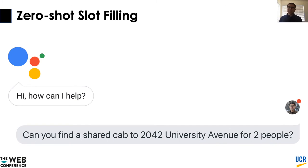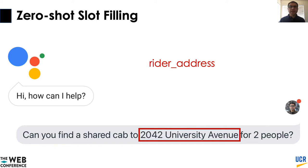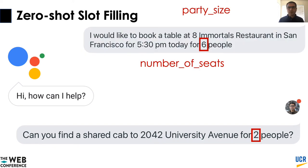Let us now look at the challenges that face a slot filling model when confronted with utterances from a new domain. Let us assume that we have a model trained on the restaurant domain, but our utterances after deployment come from the ride-sharing domain. Consider the example utterance: 'Can you find a shared cab to 204 University Avenue for two passengers?' During training, the model has not seen any training example for slot types ride_type, rider_address, and number_of_seats. Although the model has seen a similar slot type — party_size — in the restaurant domain, it is still challenging to detect slot values for number_of_seats in the unseen ride-sharing domain because of the different context, which makes zero-shot slot filling very challenging.